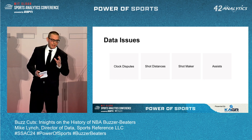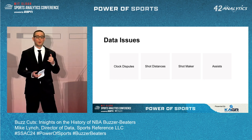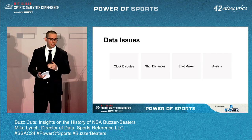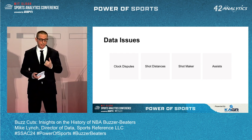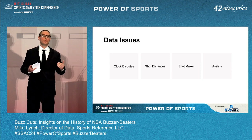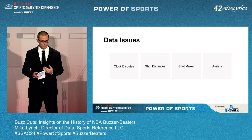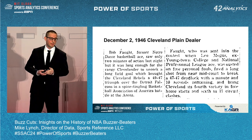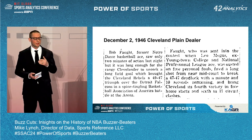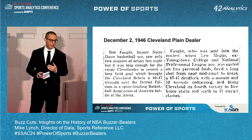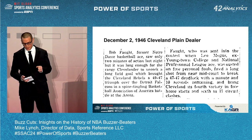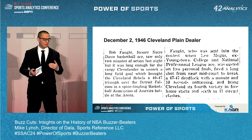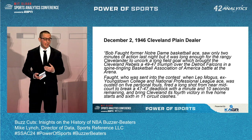The data issues I ran into fell into four main buckets: clock disputes, figuring out shot distance, uncertainty about who the shot maker was, and whether to credit an assist. For clock disputes, we have a great example from December 1946 — the BAA, which is the forerunner to the NBA, was about a month old at the time.